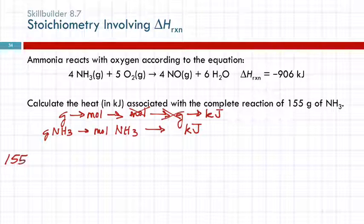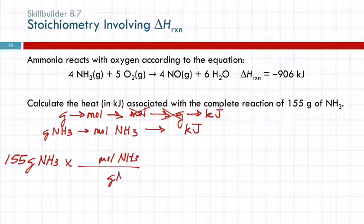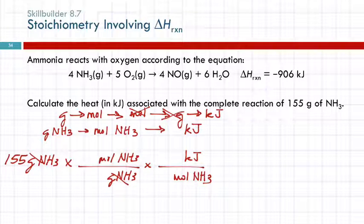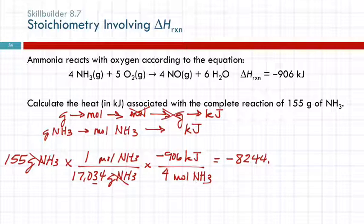So 155 grams of ammonia, I'm going to convert that to moles of ammonia. I'm going to put grams of ammonia in the denominator so those cancel out. And then I'm going to go kilojoules and moles of ammonia. I can do that because I know that minus 906 kilojoules is associated with the reaction of four moles of ammonia. You okay with that? Molar mass of ammonia, we did that earlier, so I'm not going to do that over again. 155 divided by 17.034 times negative 906.